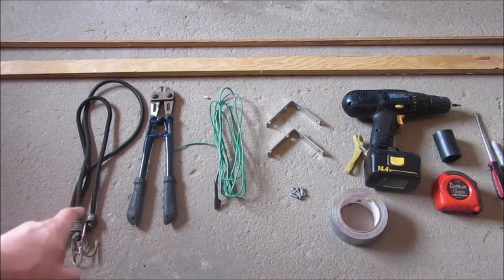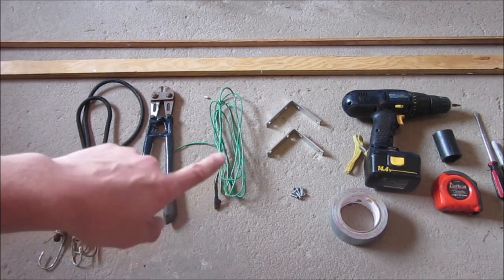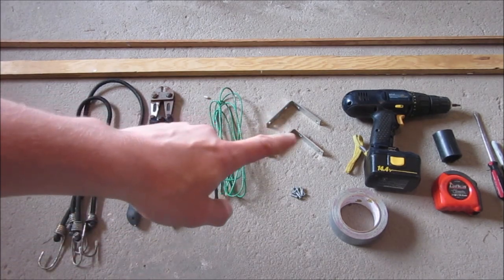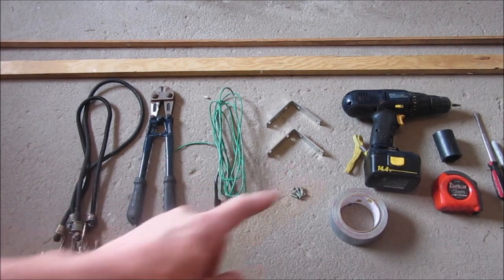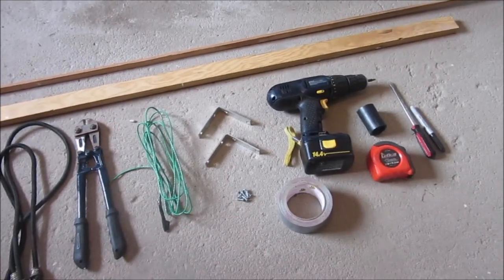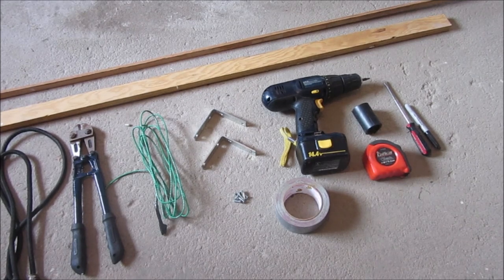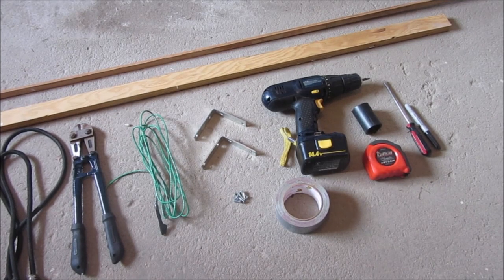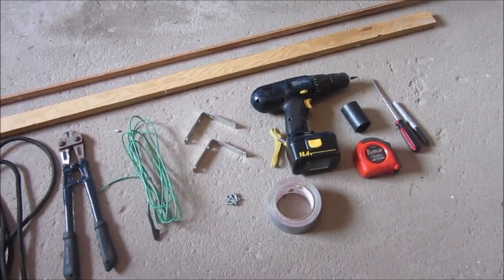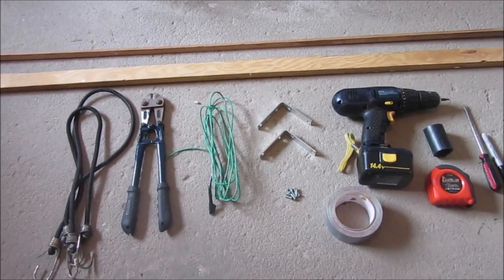You're going to need two bungee cords, some wire cutters, some type of wire that's actually a dog leash that was broken, two 90 degree brackets, some screws for those brackets. Then for tools, just a drill, some duct tape or electrical tape, measuring tape, a little piece of 1.5 or 1 to 2 inch PVC piping, a screwdriver for your screws, and a permanent marker for measuring. Let's get started on how to build it.